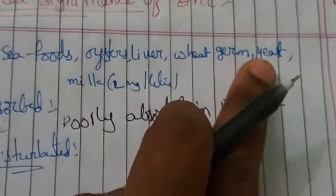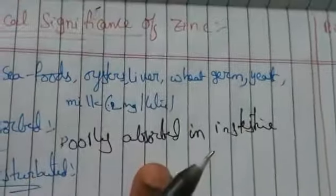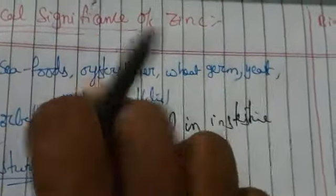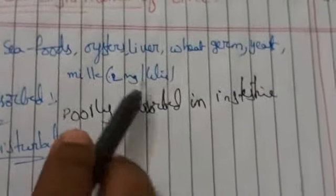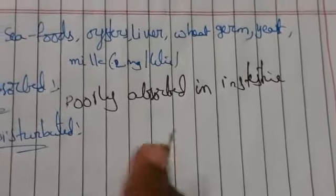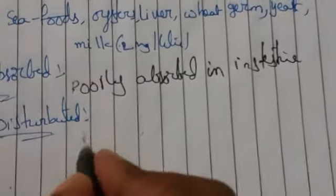So the sources of zinc include seafoods, oysters, liver, wheat germ, yeast, and milk. All of these foods will provide zinc to our body or to animals. Zinc is mainly poorly absorbed from the intestine.